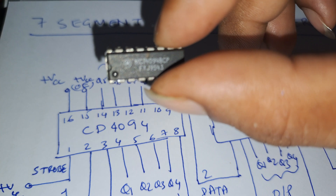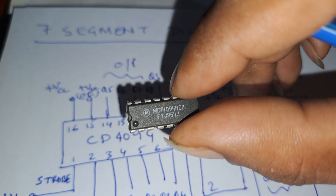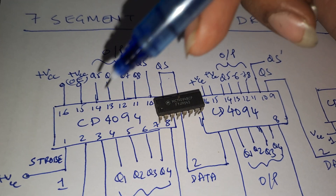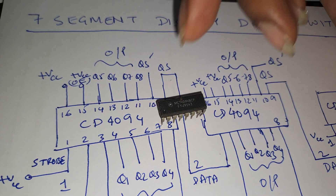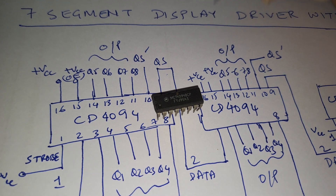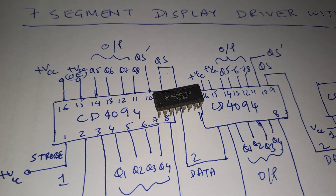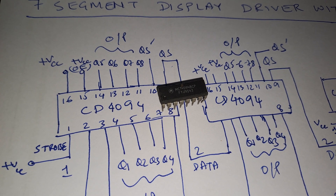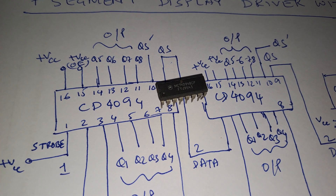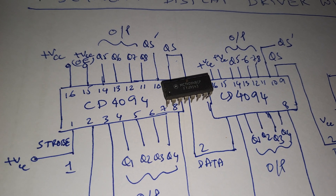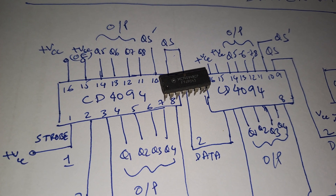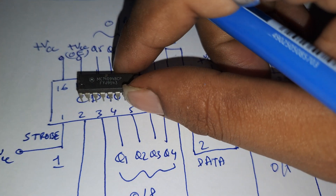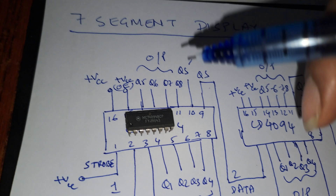As you can see in the diagram, this is the shift register — I am using the CD4094 as the shift register. This shift register is going to drive my 7-segment displays. I am using only two pins of the Arduino, and with those two pins I am doing a serial-in parallel-out operation, finally displaying digits from the shift register.